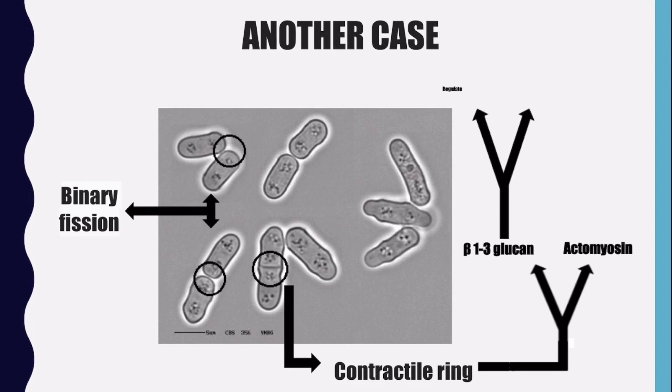Beta-1,3-glucan has been seen as a regulator of position, function, and stability of the contractile ring that participates in cell division.